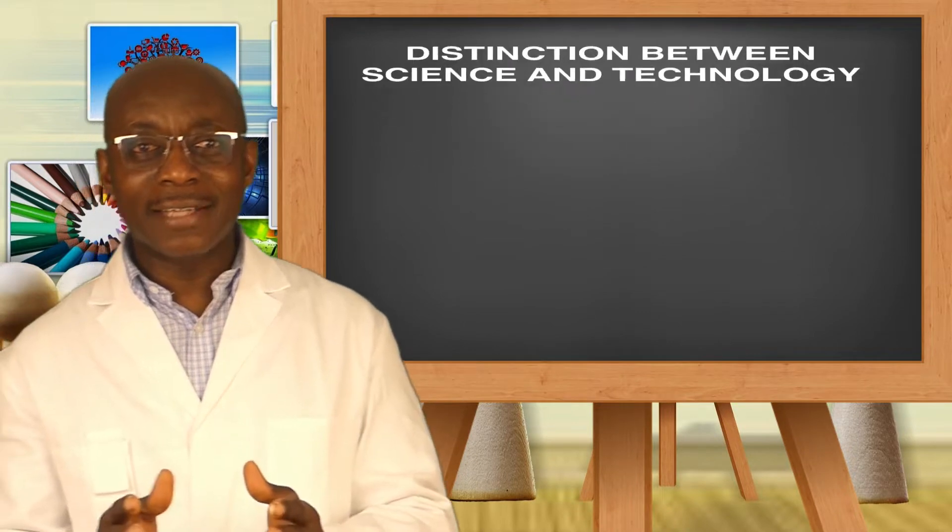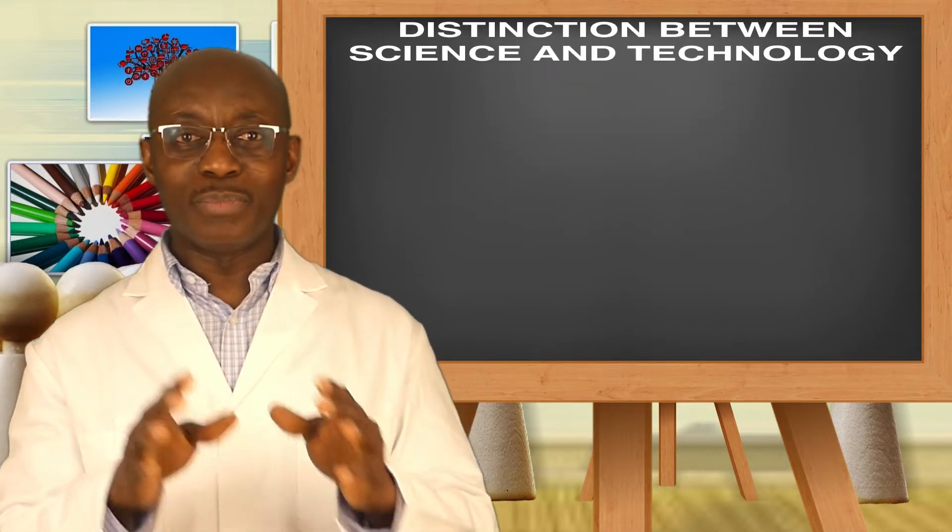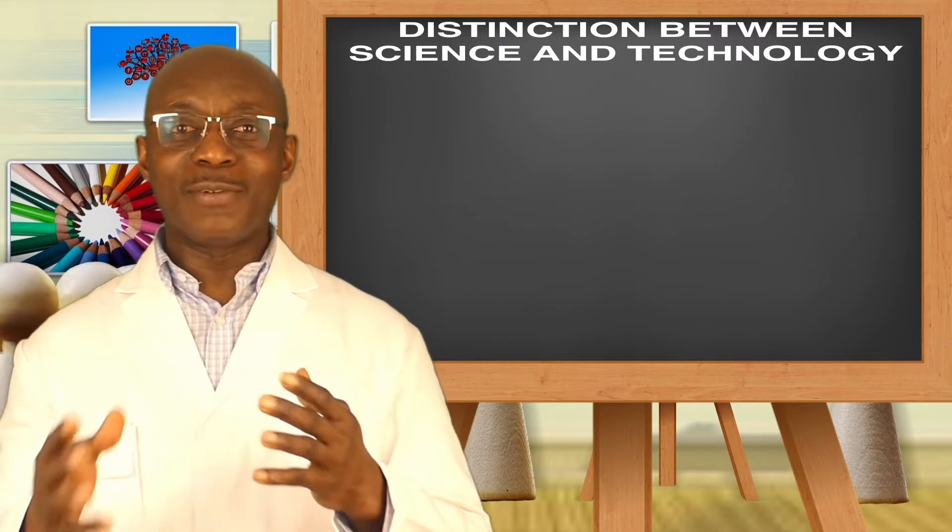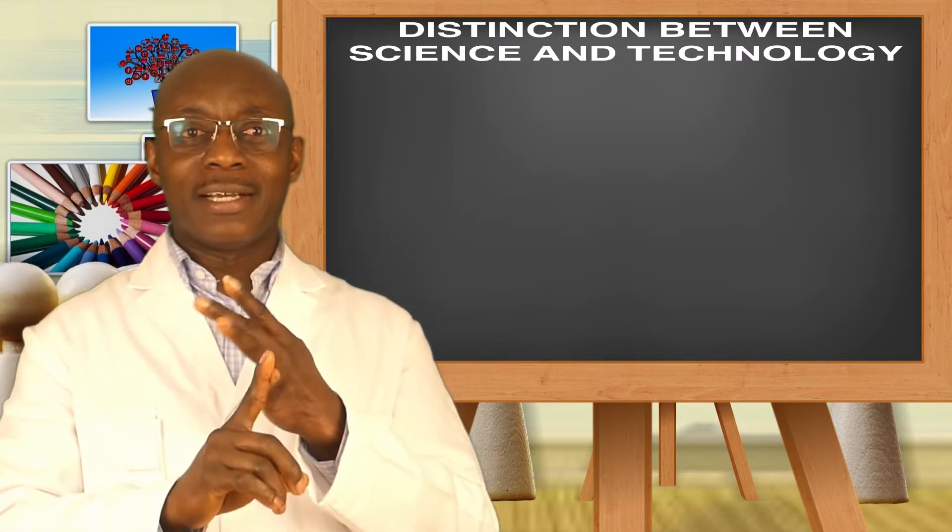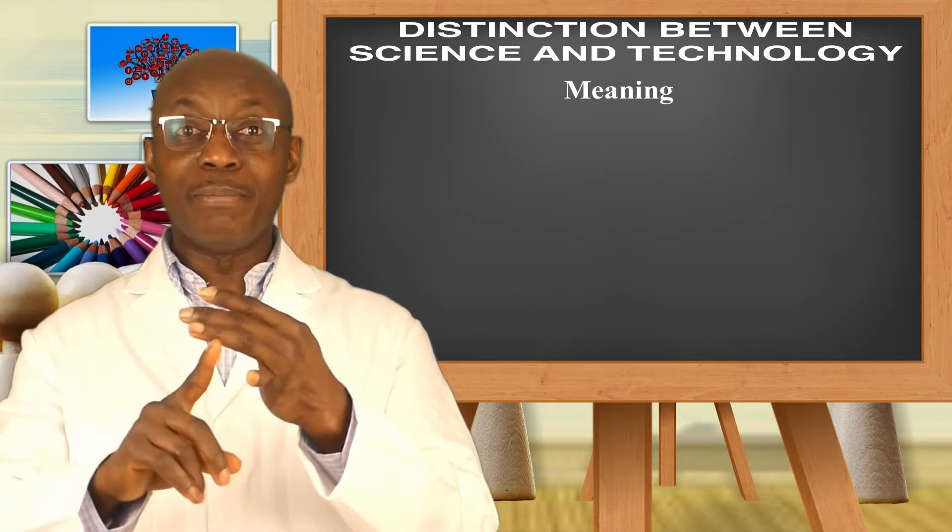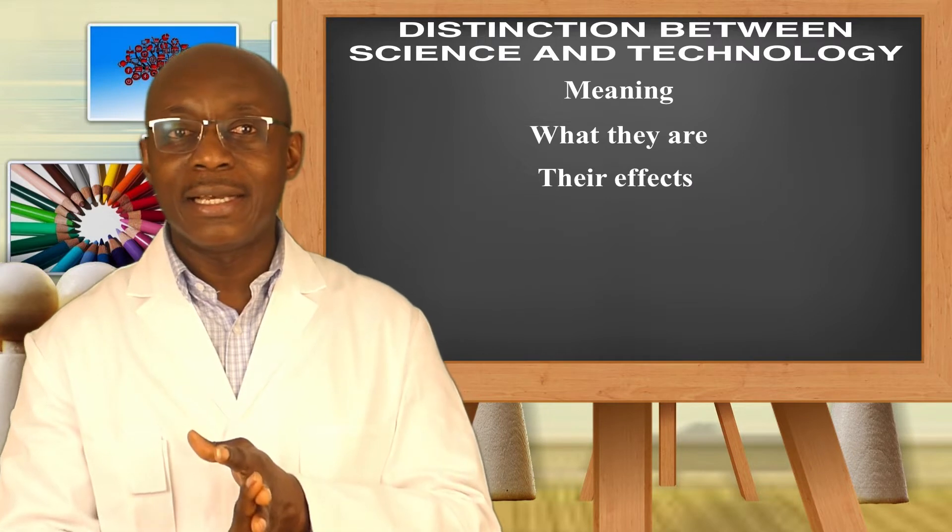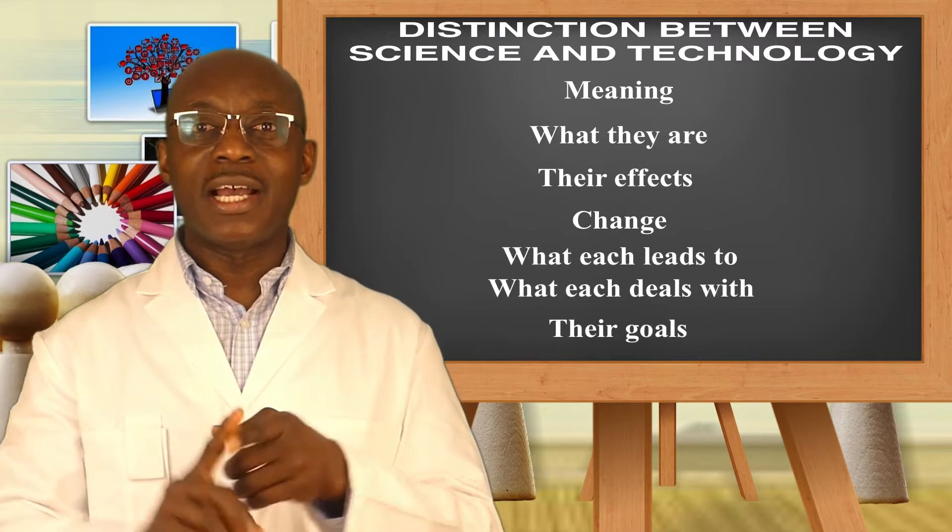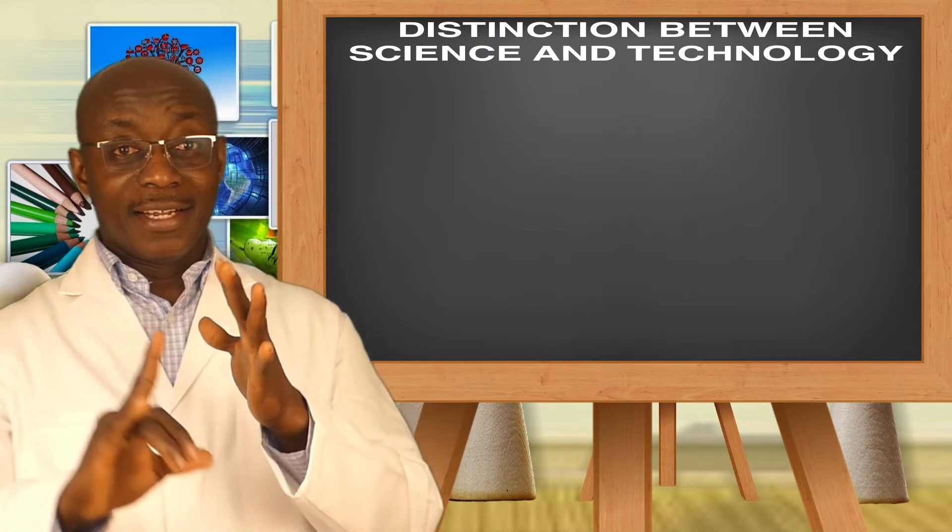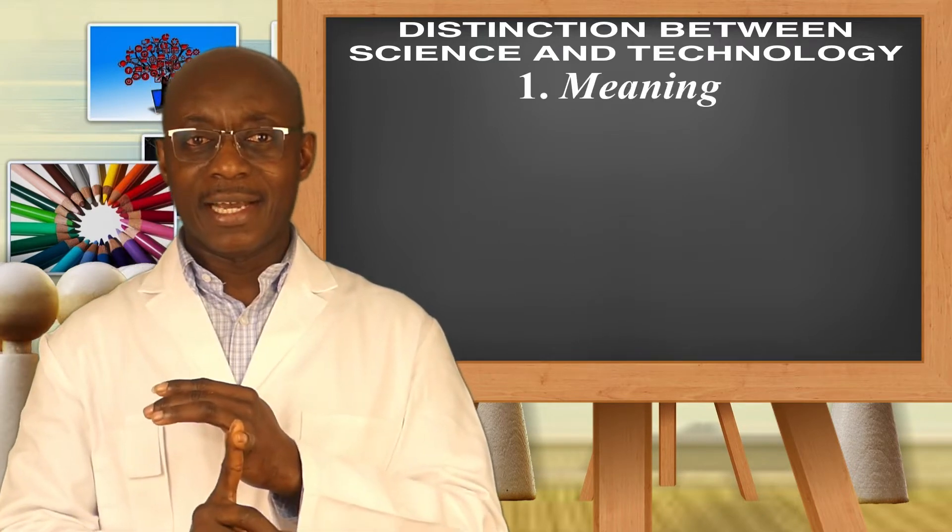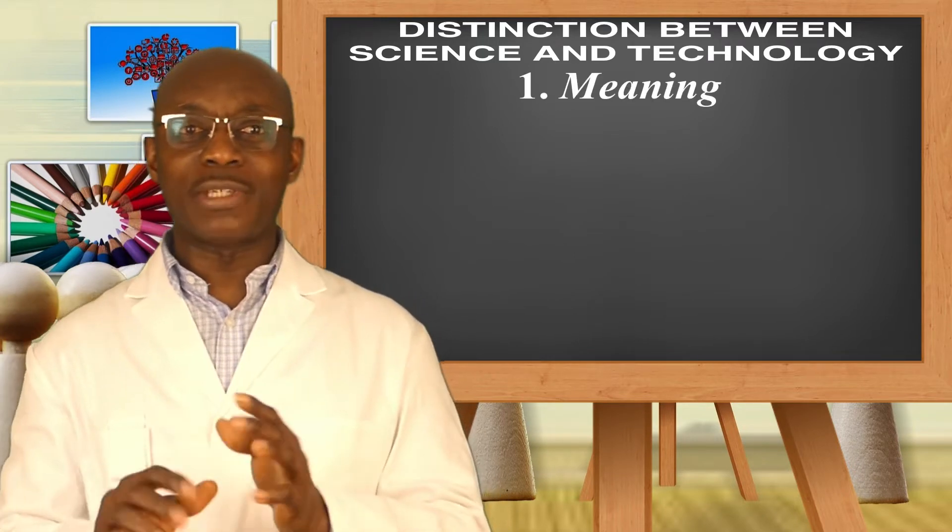Good. In this lesson, we're going to discuss the distinction between science and technology, or we're going to distinguish between science and technology. But we'll look at the distinction in terms of meaning, what they are, their effects, in terms of change, and so on and so forth. Number one, let's talk about the meaning of science and then compare it to that of technology.